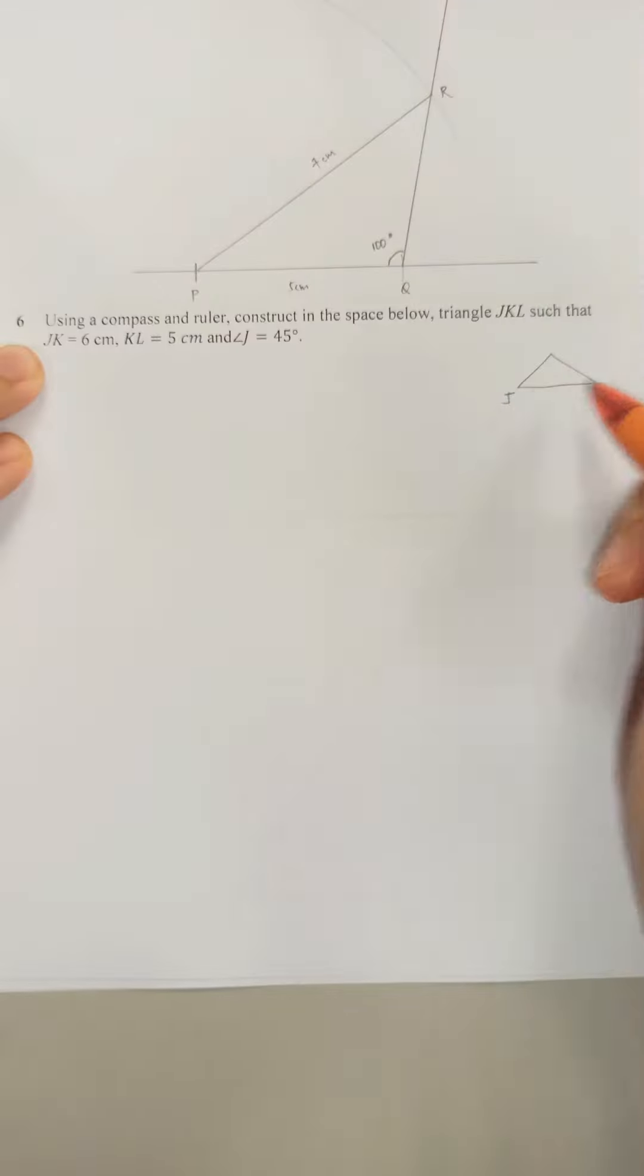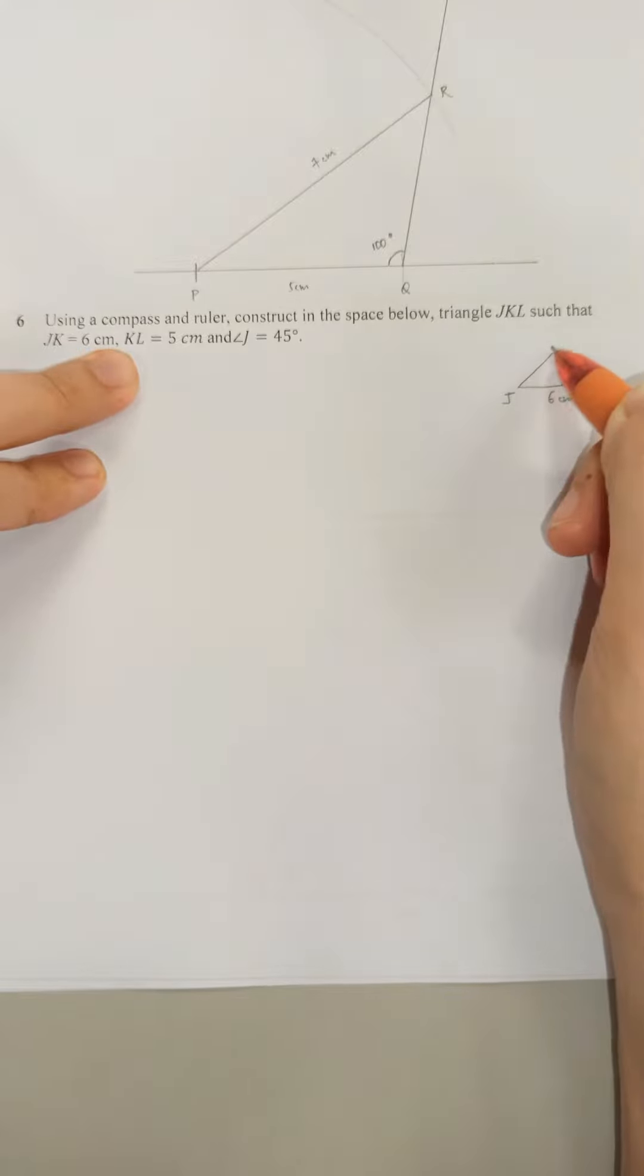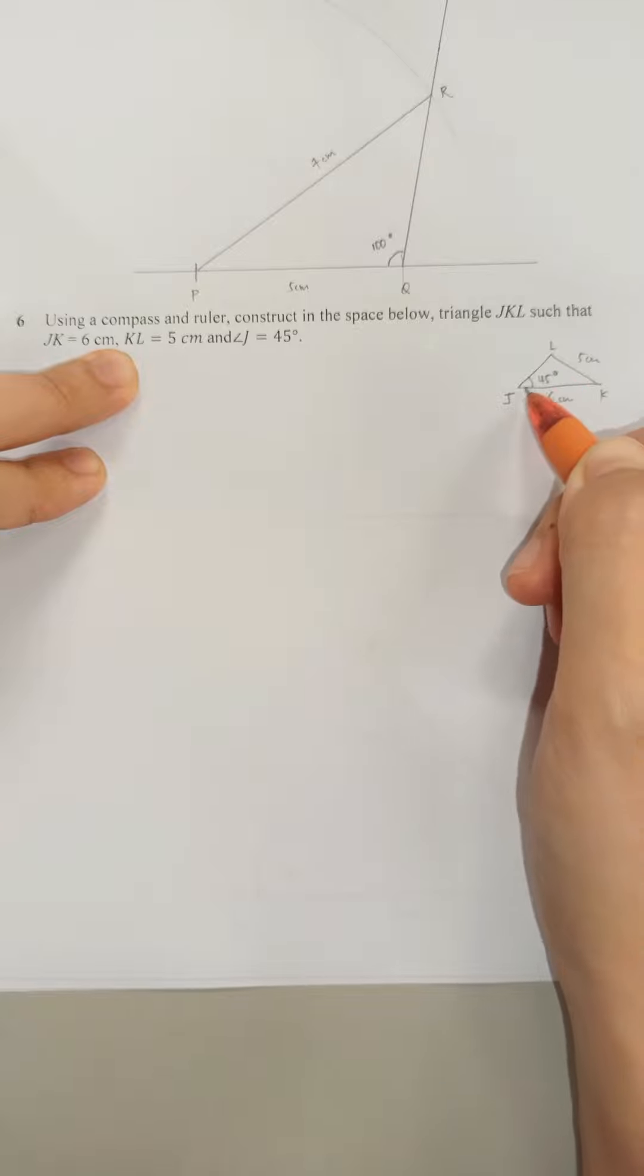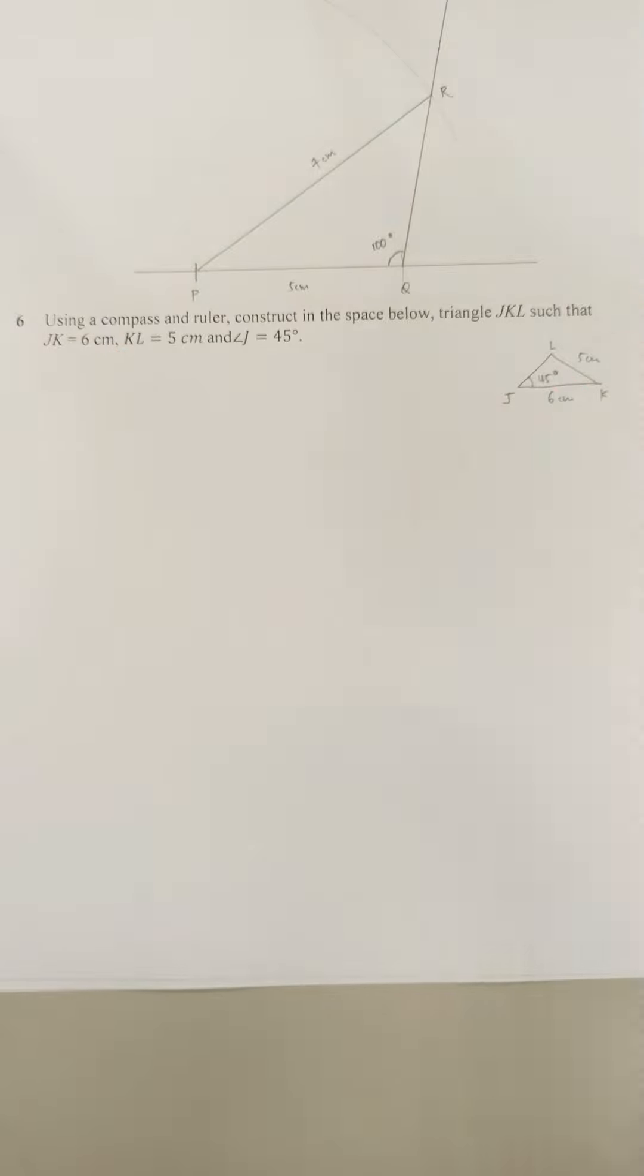So, J to K is 6. K to L, 5 cm. And angle J is 45 degrees. This looks reasonable because it's less than 90 degrees.